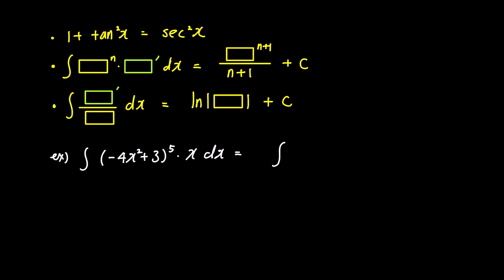If you find the derivative of (-4x² + 3), which appears right after (-4x² + 3)⁵, it is -8x, and then the integration becomes straightforward. However, since -8 doesn't appear in the original problem, we divide the integral expression by -8.